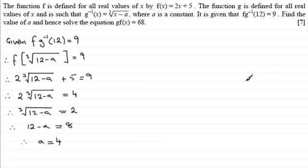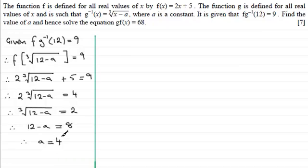So that's the first part: finding a equals 4. Now for the next part, we need to solve the equation gf(x) = 68. You might want to pause the video here if you now have a and want to carry on yourself. There are two ways to do this — a quick way, which I'll do first, and a slower method afterwards.